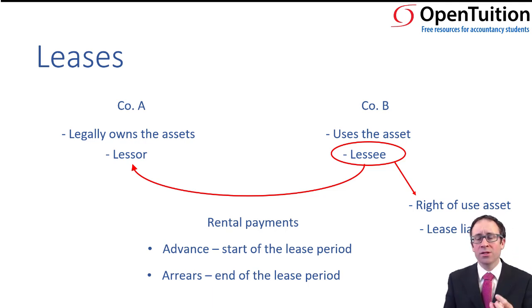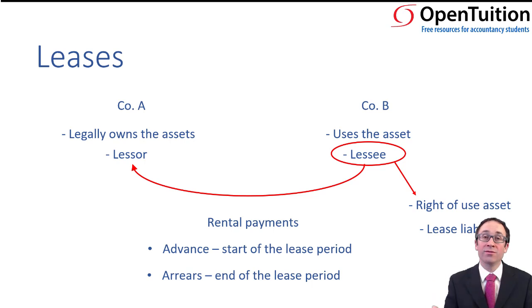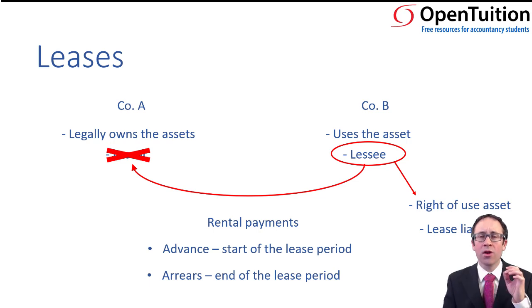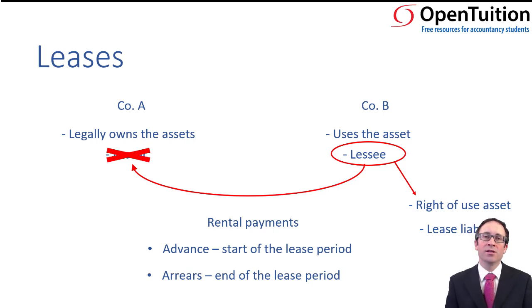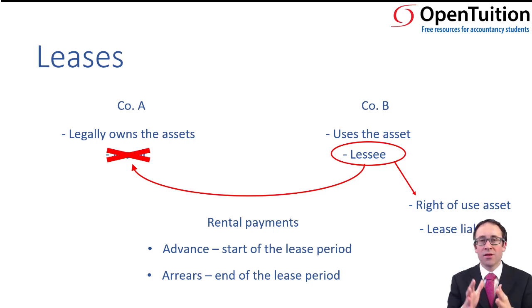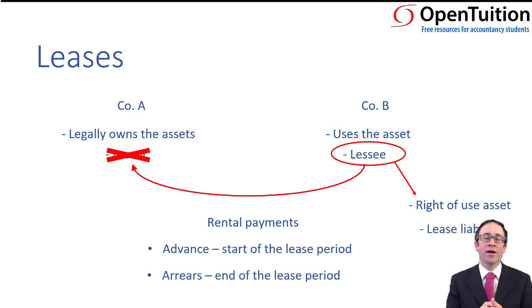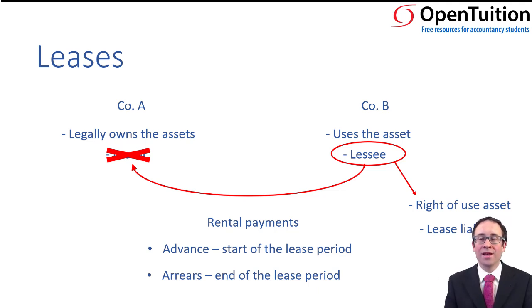The majority of this chapter focuses on the lessee's accounting and how to account for the right of use asset and the lease liability. Lessor accounting is not a concern at financial reporting level — we address that further on in strategic business reporting. For now, we're focusing on the lessee: the business that uses the asset, how they control it, and therefore recognise a right of use asset and record the corresponding lease liability.